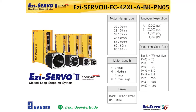Gearbox and brake specifications are also available. Gearboxes are planetary gearboxes, and gear ratio can be selected as shown in the table. The brake is a non-excitation type that activates when the power goes off — for example, you can use it to prevent the Z-axis load from falling. Please refer to the catalog for details.